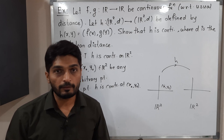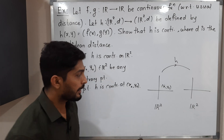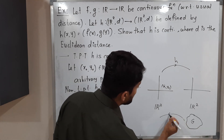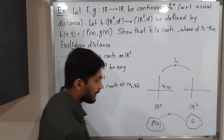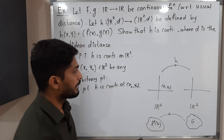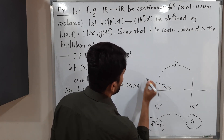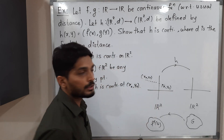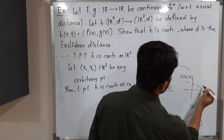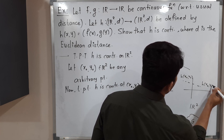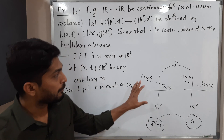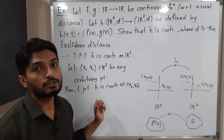Using the epsilon-delta definition we can prove the same thing. We also have a definition involving open sets: if you have any open set in the codomain and its inverse image F⁻¹(G) is open in the domain, then we say the function is continuous. The same holds for closed sets. One more definition: if a sequence (xn, yn) converges to (x₀, y₀) and its image sequence H(xn, yn) converges to H(x₀, y₀), then H is continuous at (x₀, y₀). We are going to use this sequential definition.